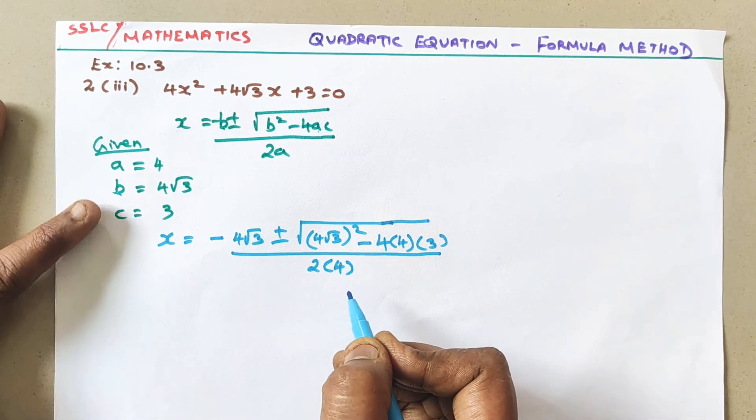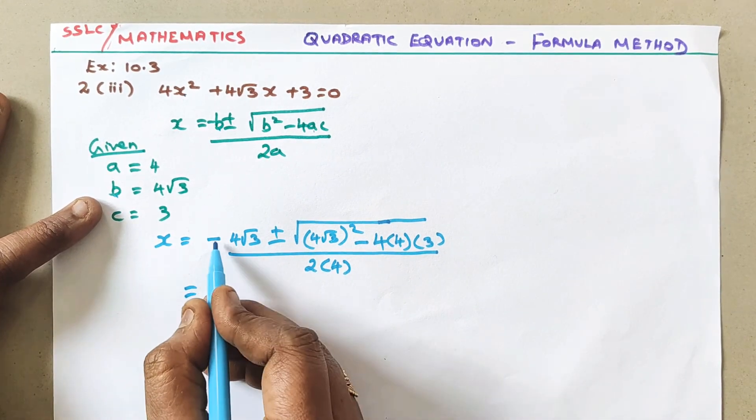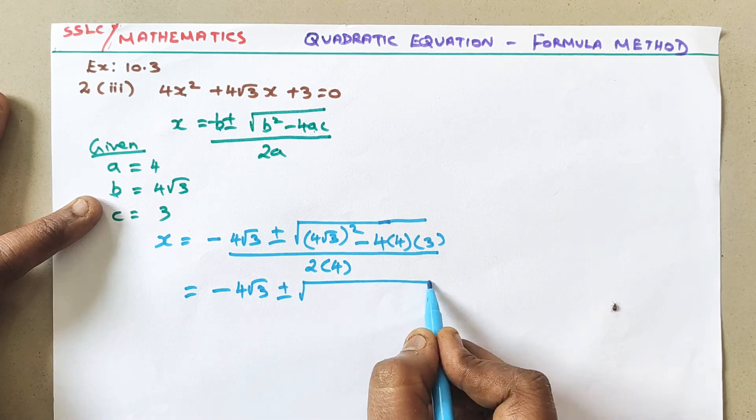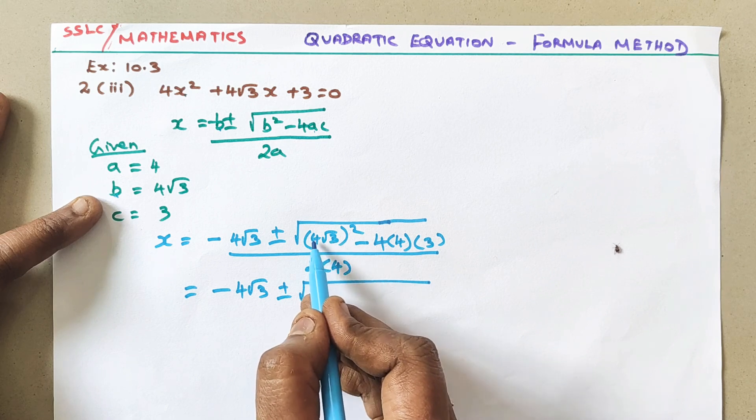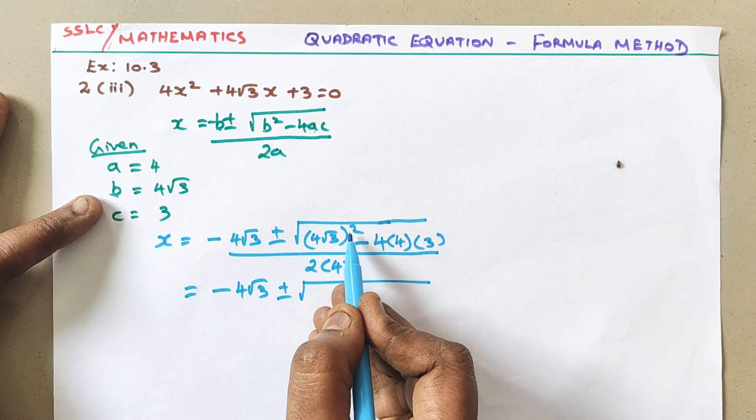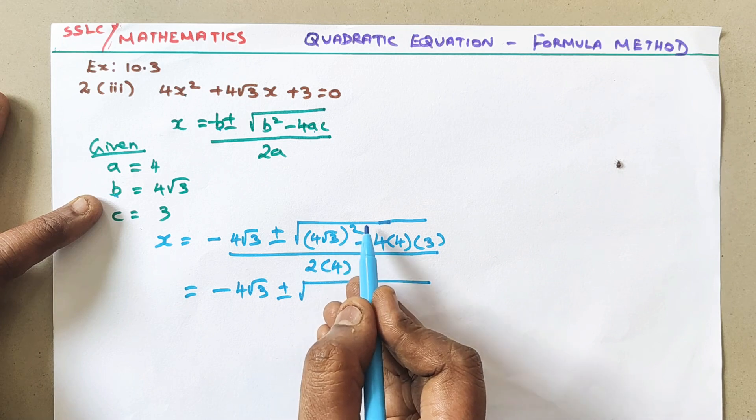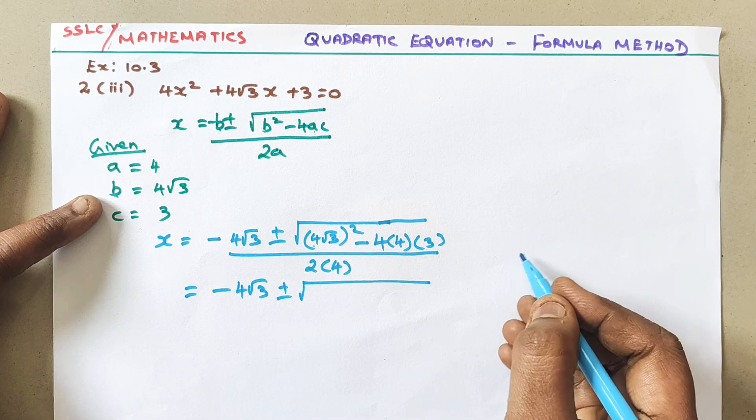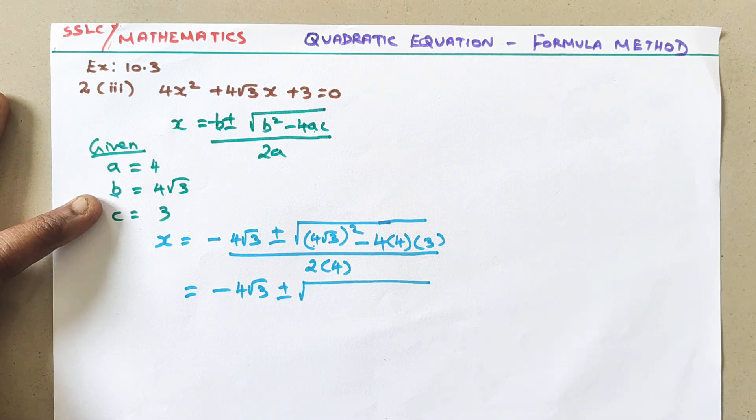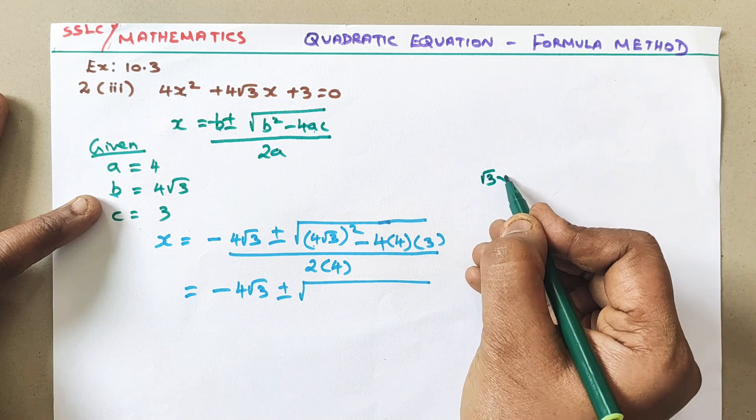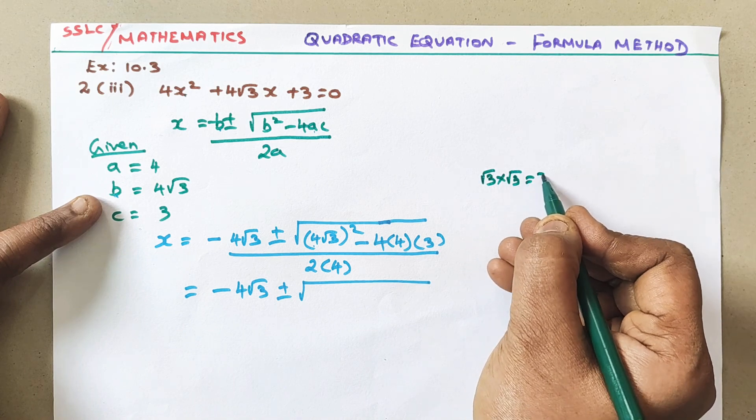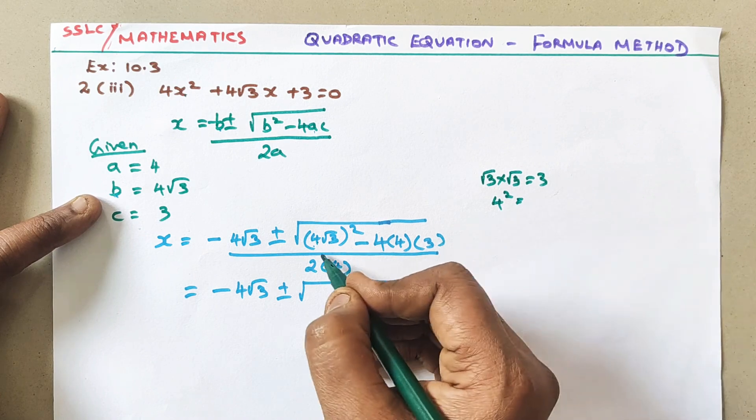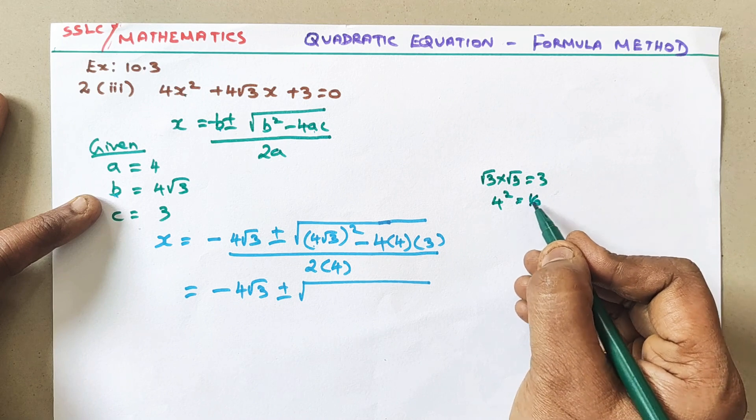Now simplify here. -4√3 as it is, plus or minus square root of... Now how to multiply this? Even 4 should be also multiplied 2 times. Even √3 also multiply 2 times. That is √3 × √3 and 4 × 4. Let me multiply √3 × √3. As I said before, √3 × √3 is 3. Then 4².